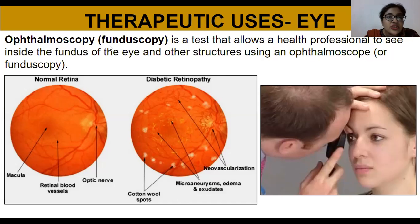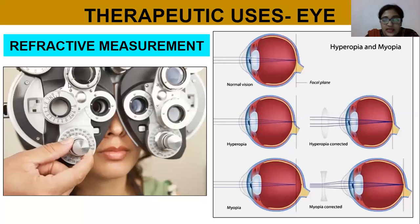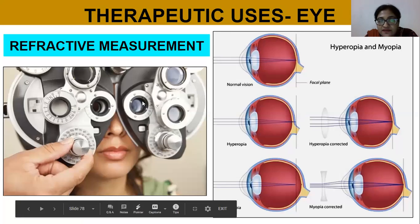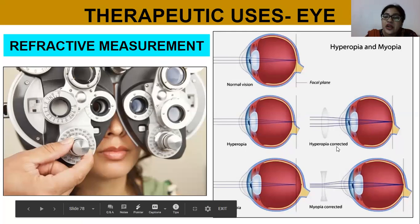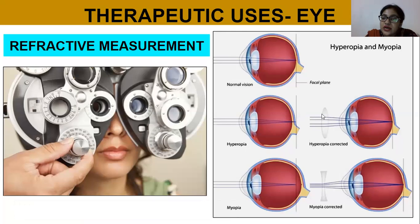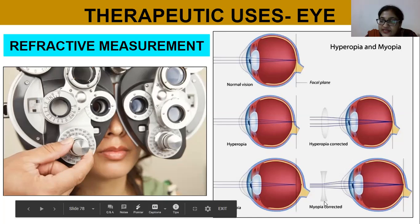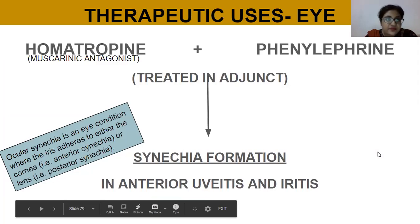This process is called fundoscopy — a test that allows a health professional to see inside the fundus of the eye and other structures. For refractive measurements, the doctor keeps changing lenses to determine your eye power. The refractive errors include myopia and hyperopia. Hyperopia is corrected with a convex lens placed in front of the eye, and myopia is corrected with a concave lens.